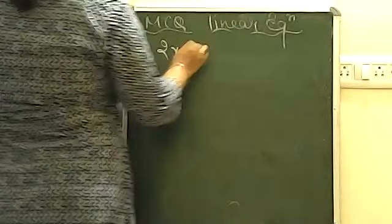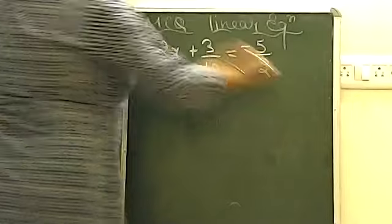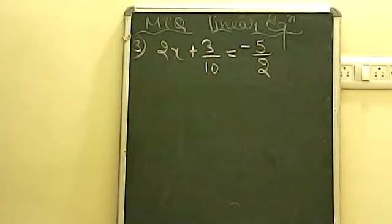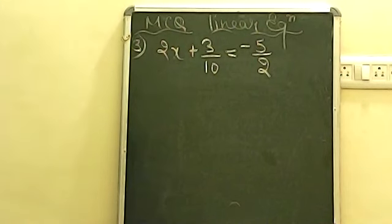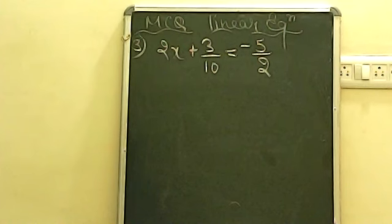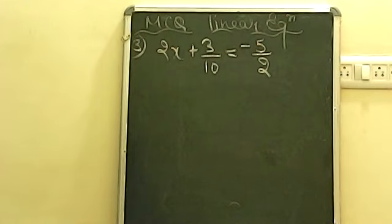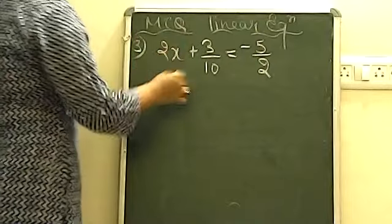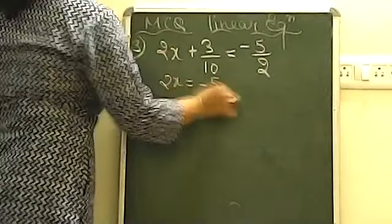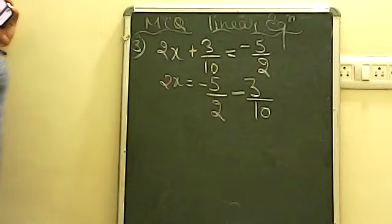Now question number 3: find the root of the equation 2/x - 3/10 = -5/2. The root of the equation means the solution — whatever value of the variable x satisfies the equation. Here the variable is x, so the value of x we find will be the root. Rearranging: 2x = -5/2 + 3/10, moving 3/10 to the right side gives -3/10.